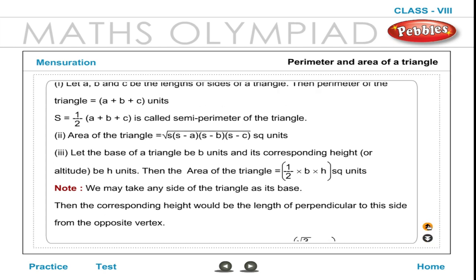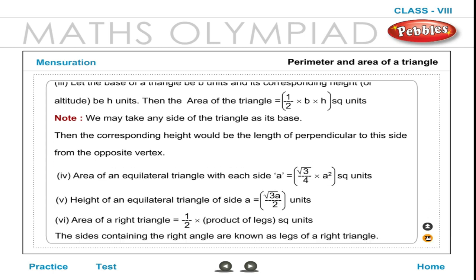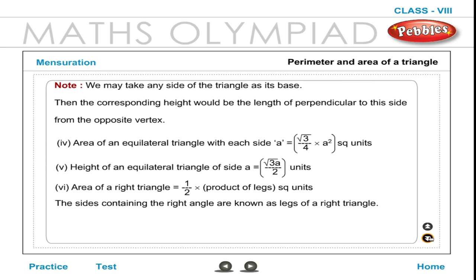5. Height of an equilateral triangle of side A is equal to (√3 × A) / 2 units. 6. Area of a right triangle is equal to ½ × (product of legs) square units. The sides containing the right angle are known as the legs of a right triangle.